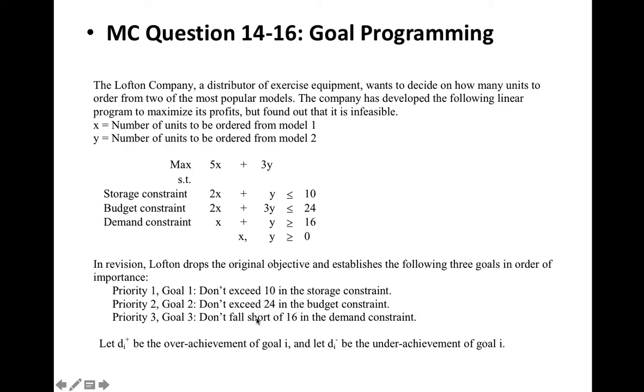In order to develop the goal programming, they define the deviation variable d_i^+ to be the overachievement of the ith goal, and d_i^- to be the underachievement of the ith goal.